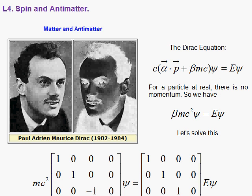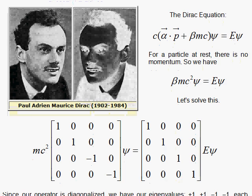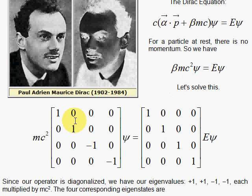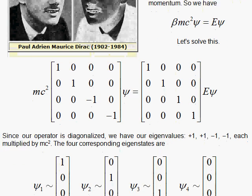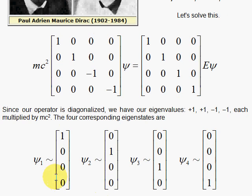Let's write this out in matrix form. The beta matrix is 1, 1, negative 1, negative 1, and the E is multiplying the identity matrix. So there's our matrix equation. We want to find the eigenvalues. And when you have a matrix that's diagonalized, the eigenvalues are right there for you: 1, 1, minus 1, minus 1. The eigenvectors are simply going to be column vectors with 1 in one slot and 0s in everything else.